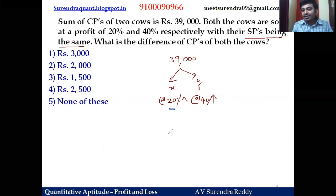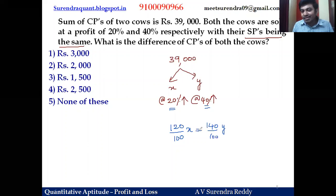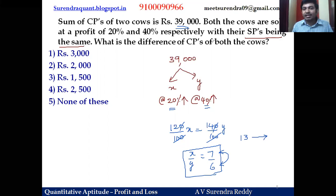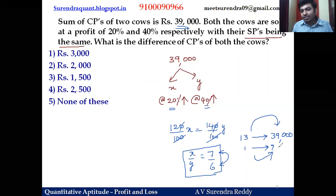Selling price of first cow is 120 percent of x; selling price of second cow is 140 percent of y. Since selling prices are equal: 120x equals 140y. Cancel the zeros — x to y ratio is 14 to 12, which is 7 to 6. Total parts: 7 plus 6 equals 13 parts, worth 39,000 rupees. The difference in cost prices is 7 minus 6 equals 1 part. One part equals 39,000 divided by 13 equals 3000 rupees.